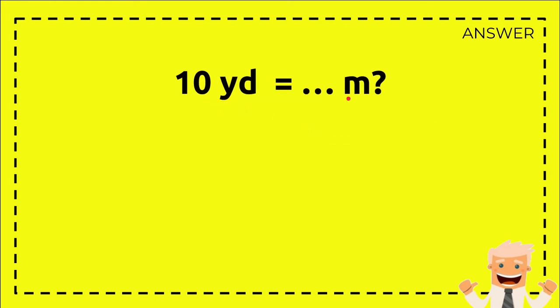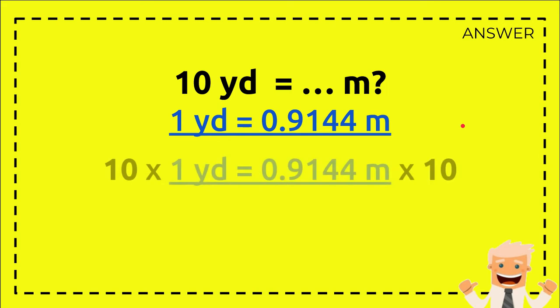And then you write the equation, the formula: 1 yard equals 0.9144 meters. Now this is how you solve the problem. You need to write the formula again: 1 yard equals 0.9144 meters.